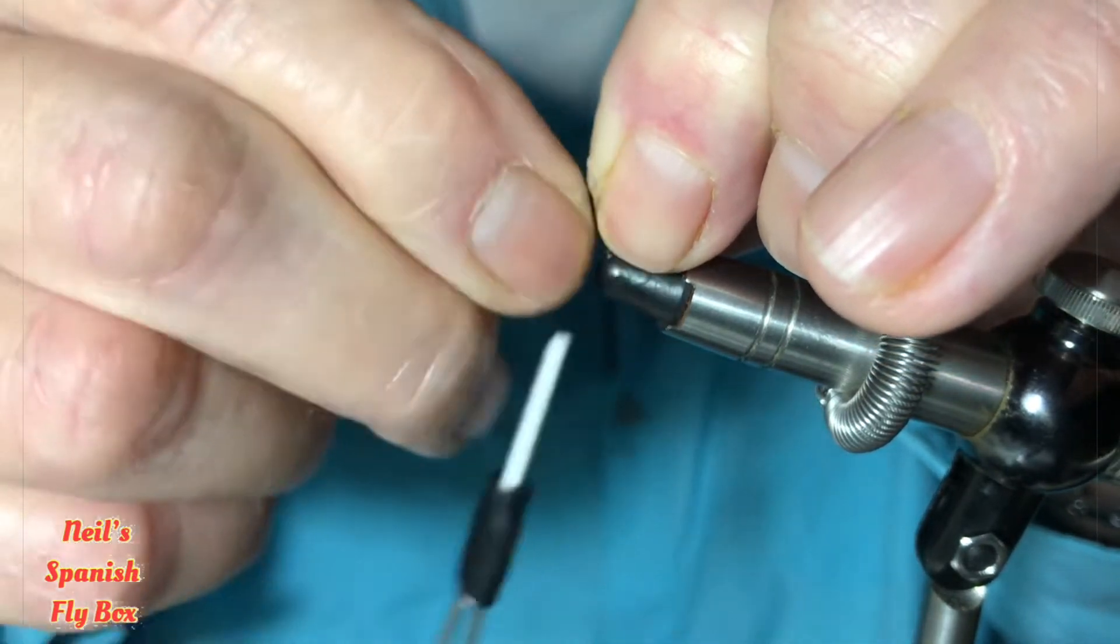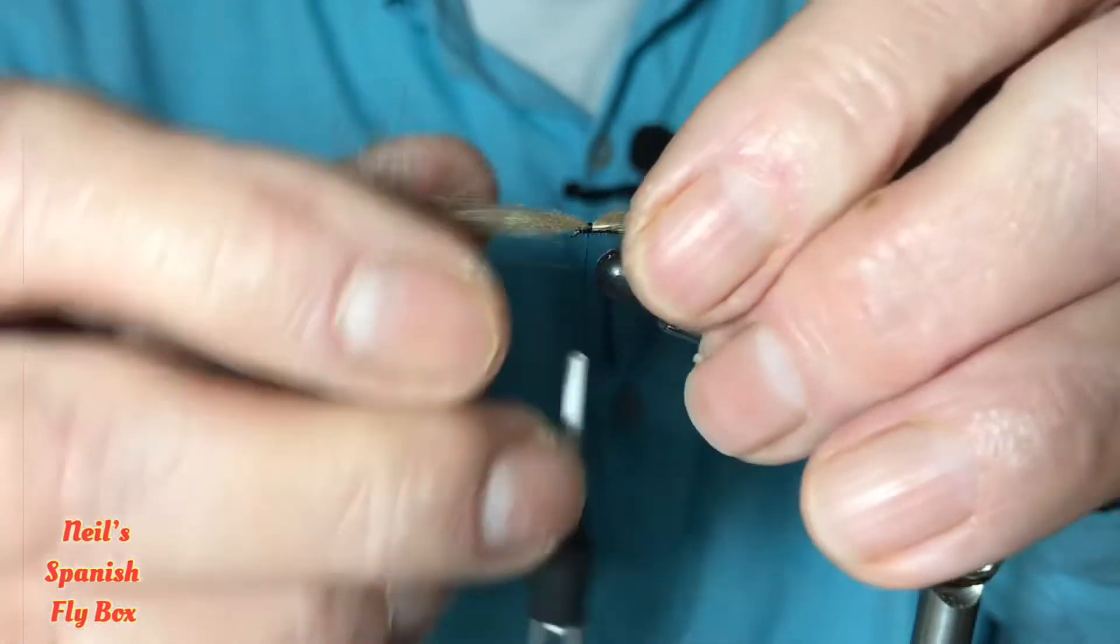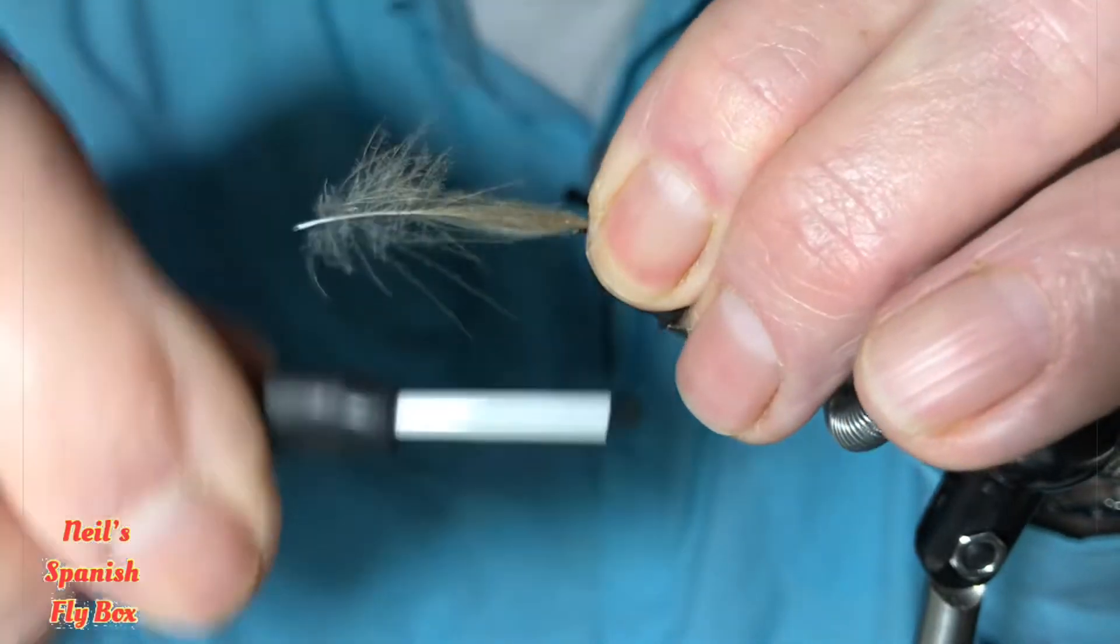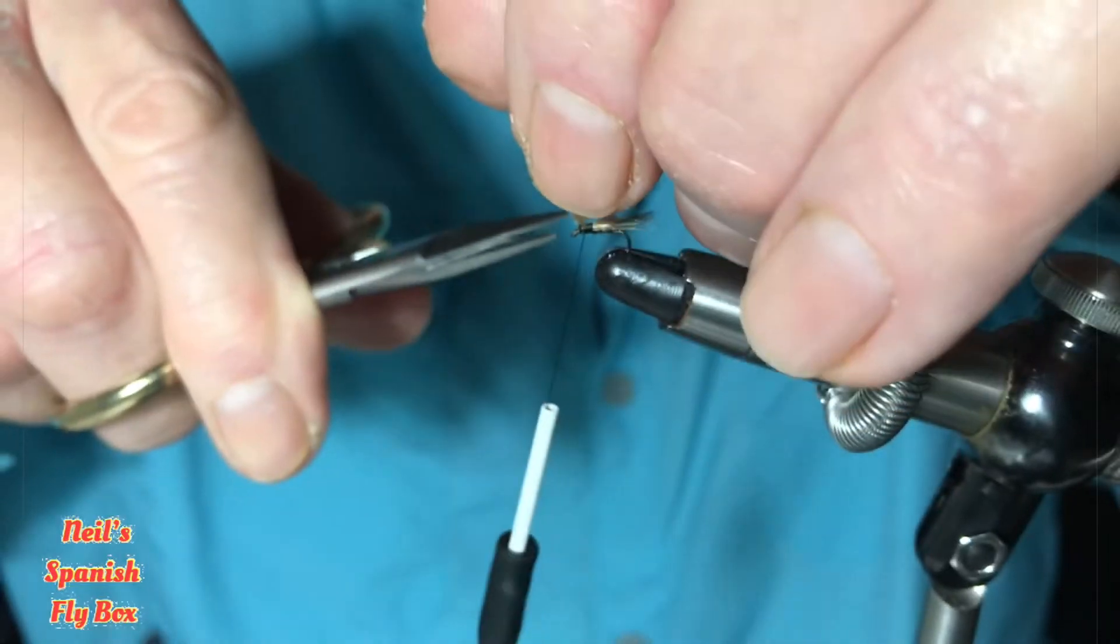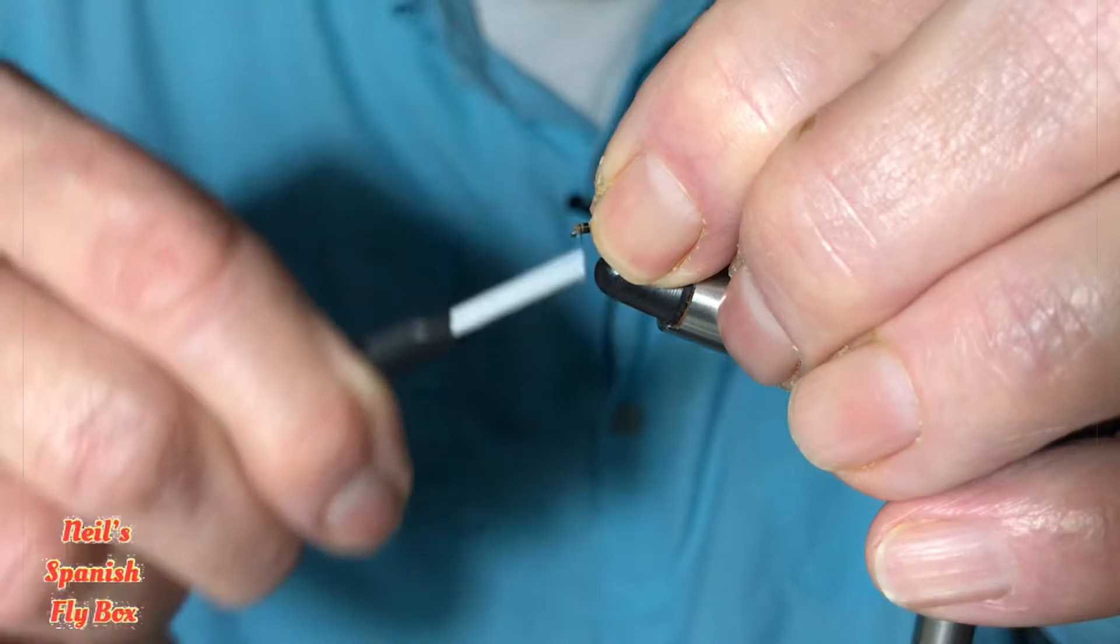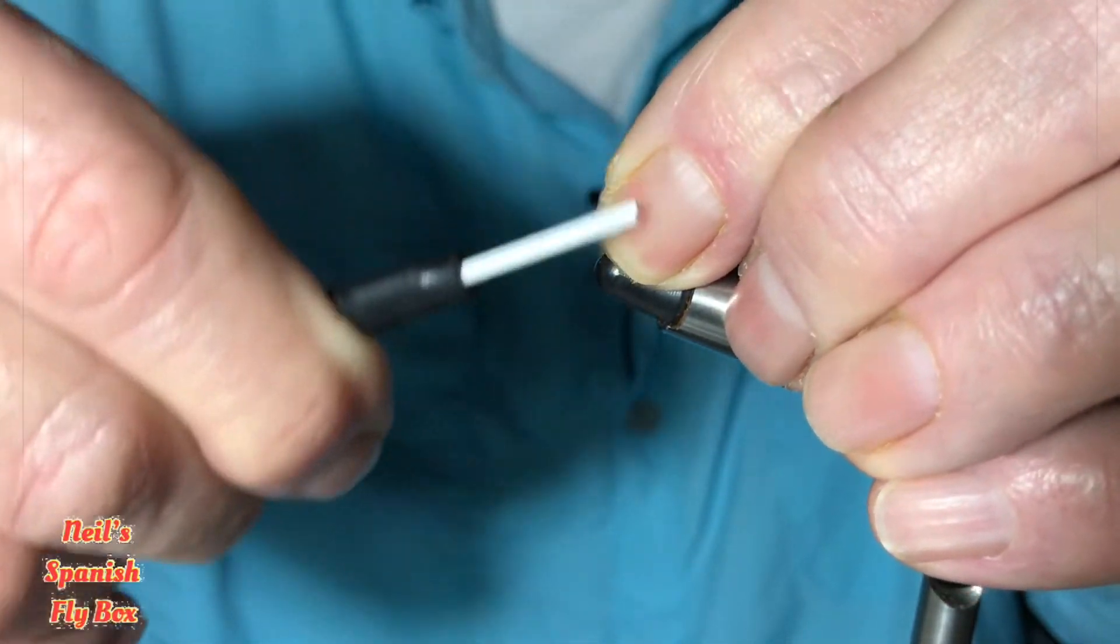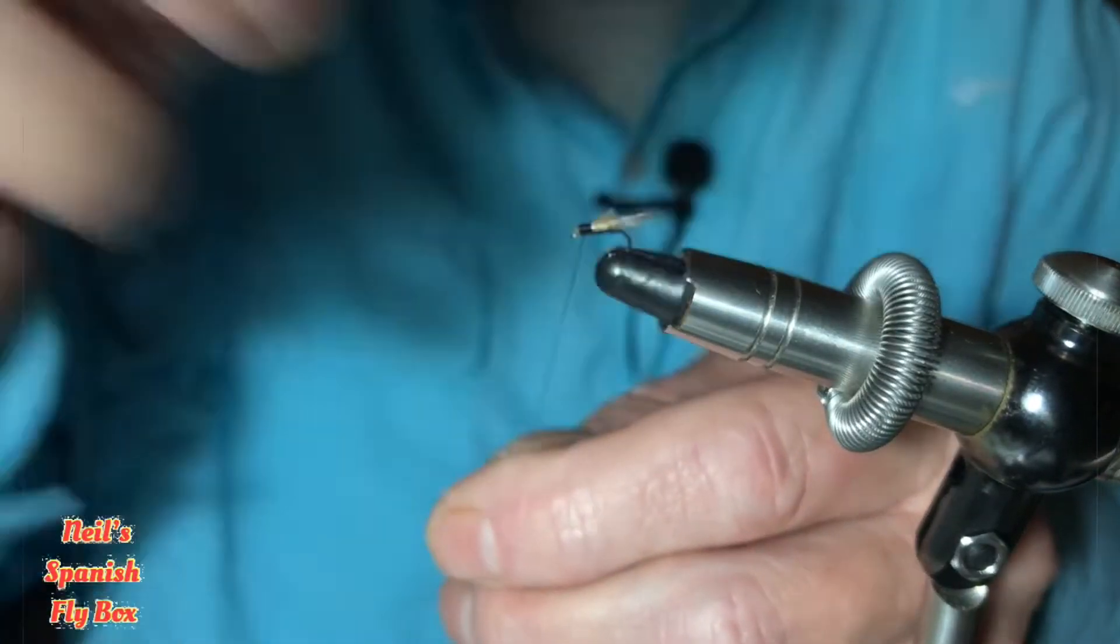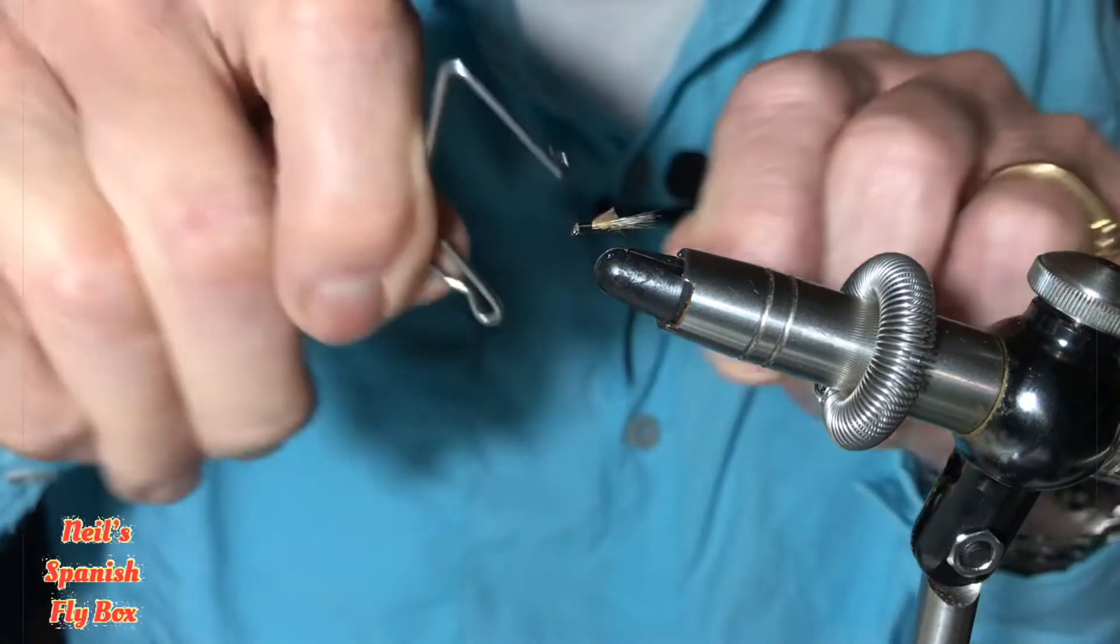Now this doesn't need to be too long. That's about it. And tie down. And trim off the CDC. And tidy up. Just build up the head a little. And tie off the fly.